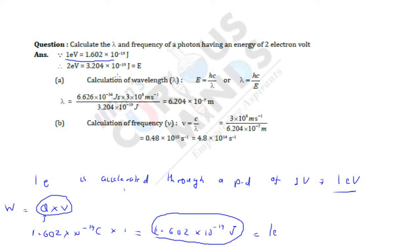Even if you don't go into deep, this is the meaning of 1 electron volt. Now we know how much 1 electron volt is, so 2 electron volt is twice of this. This is E. Now we have to find the wavelength and the frequency.